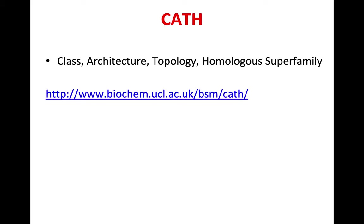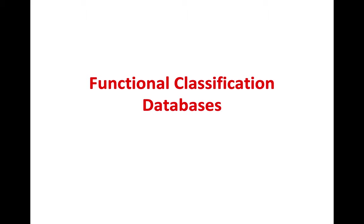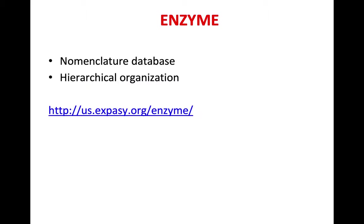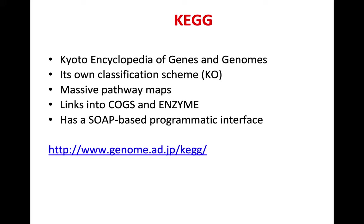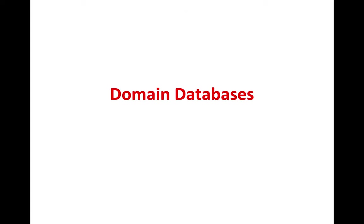CATH stands for Class, Architecture, Topology, and Homologous Superfamily, available from biocam.ucl.ac.uk at University College London. Functional classification databases include Enzyme, which provides a nomenclature database with hierarchical organization. KEGG — Kyoto Encyclopedia of Genes and Genomes — is based in Japan, has its own classification scheme, a massive pathway map, and like BRENDA you can build your own pathways. It has links to COGs and Enzyme and a SOAP-based programmatic interface.